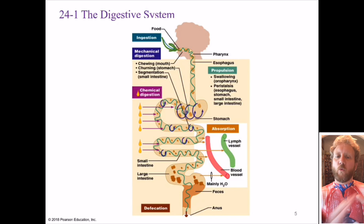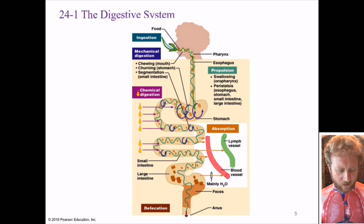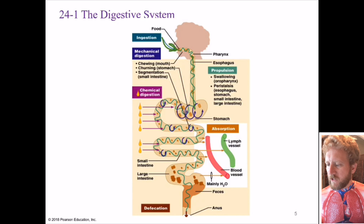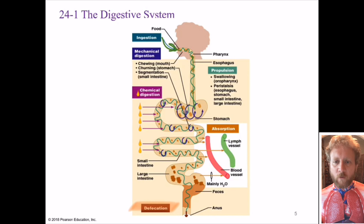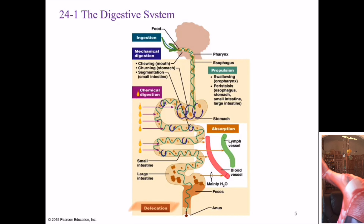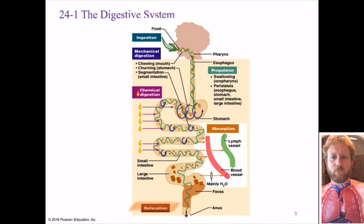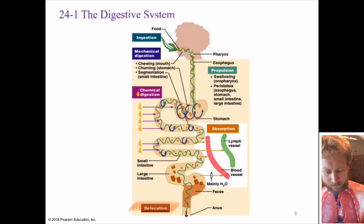Peristalsis is the regular rhythmic movement of food that happens in the esophagus, but also in the intestines farther on. Chemical digestion is the actual breaking down of substances into smaller organic fragments and getting them ready for absorption — the actual taking in of those nutrients into the bloodstream and then being circulated through the rest of the body. And then, at the end of all that, is defecation — the expulsion of waste in the form of feces out of your anus. So basically, we're going to go through your entire digestive system from beginning to end.